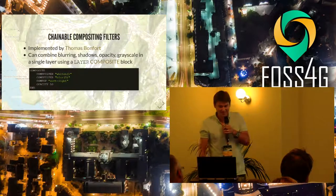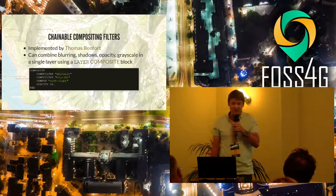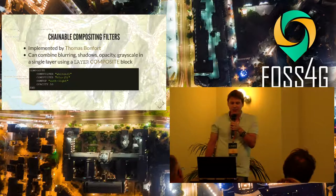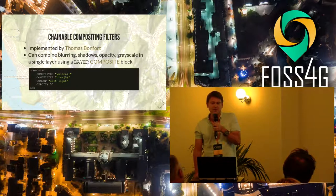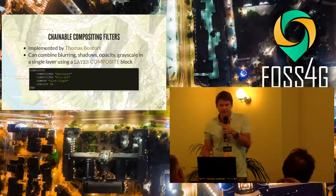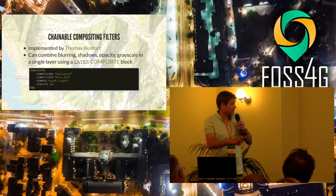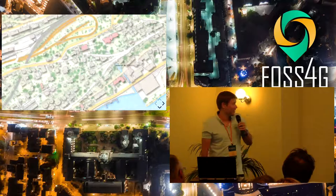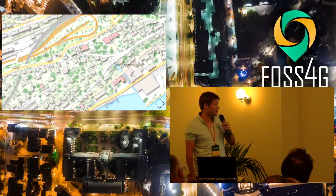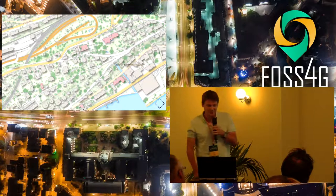One of the other nice features is the chainable compositing features. These arrived in version 7, but in 7.2 they became chainable, meaning you could implement several filters on top of each other for a layer. You can do things like blurring, shadows, grayscale, and transparency. To add these to a layer, you add in a composite block and then add your filters. You end up with nice things like the hillshade you see in the background, and you can do effects like the buildings with a nice blurry shadow effect — well worth looking at for making stunning maps.